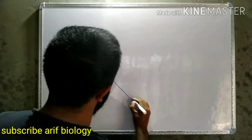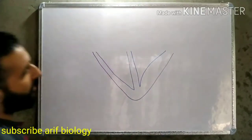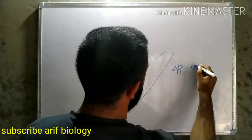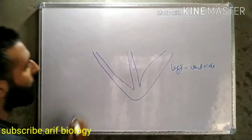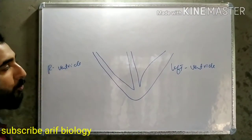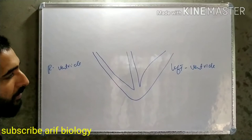Today we will see what is present inside the heart, step by step. First we will see the human heart. Suppose the human heart looks like this. This portion is known as the left ventricle, and this side is the right ventricle. So there are two ventricles - this is the left ventricle and this is the right ventricle.